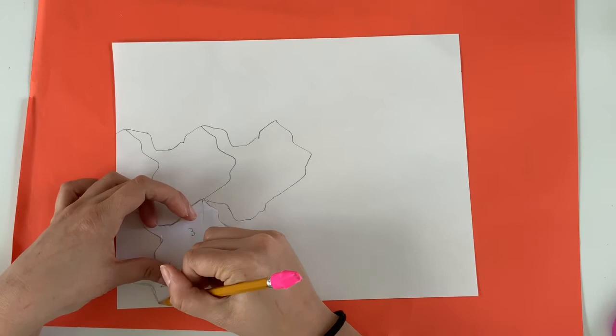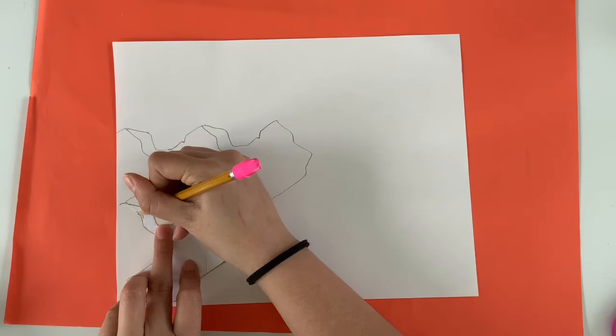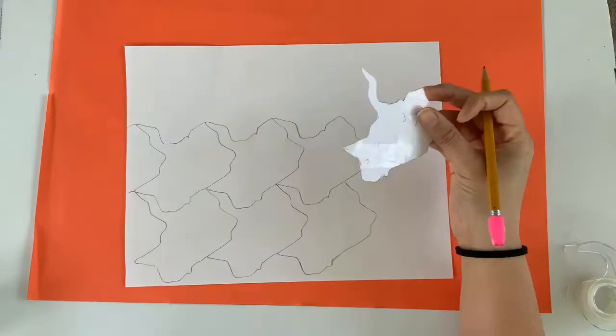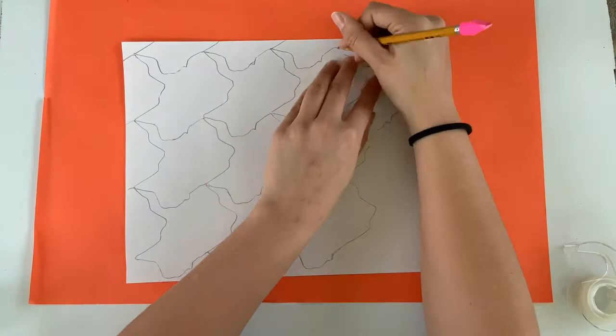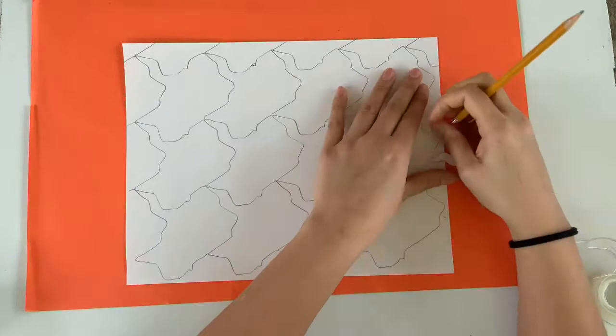So I want you to continue this until your entire paper is filled. I even want you to do the edges where your tessellation tracer will be hanging off the sides of the page. Now I have sped this video up so you don't need to sit and watch me draw this in real time, but if you need to pause it to repeat any steps or just to see how it's done again, that is totally fine.